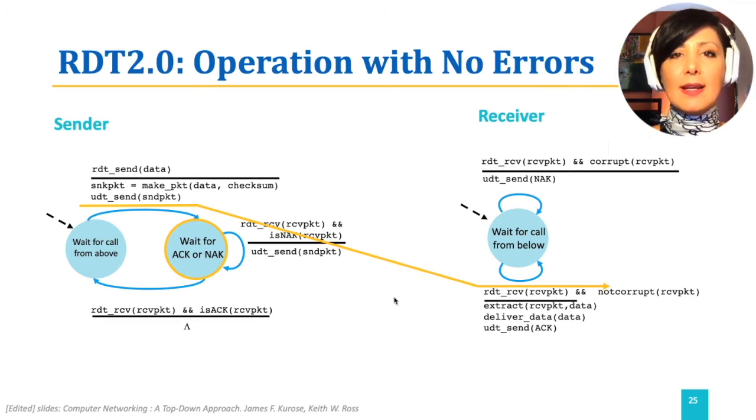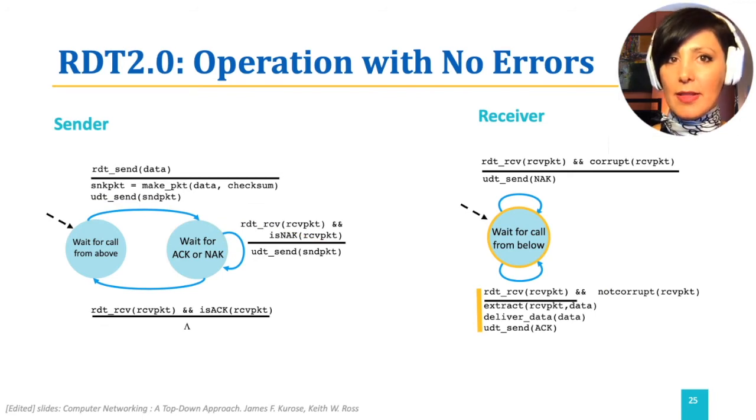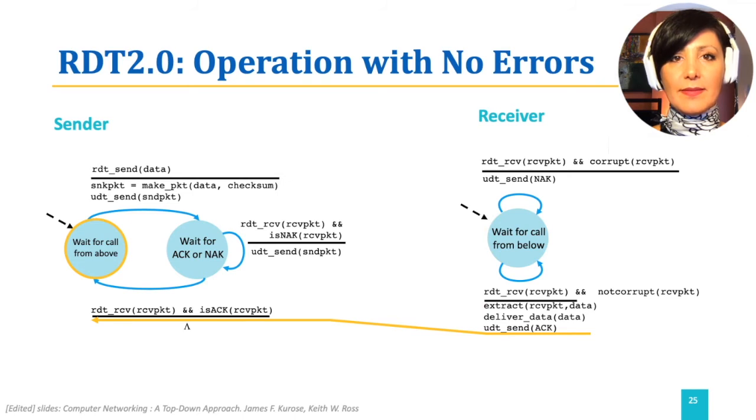On the receiver side, the packet is received and it is not corrupted. Therefore, the packet data is extracted and sent to the upper layer, and ACK is sent to the sender. The sender receives the ACK and goes back to the state of waiting for call from the upper layer.